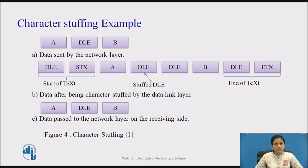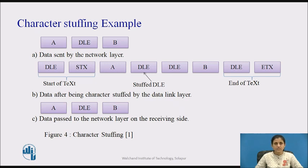Figure 4a shows the data sent by the network layer — 'A DLE V' in this example. Figure 4b shows that each frame starts with DLE STX and ends with DLE ETX. Figure 4c shows the data at the network layer of the receiving side.